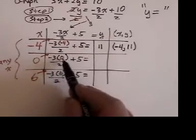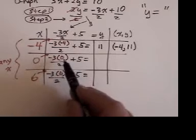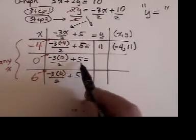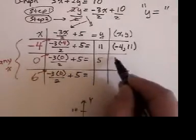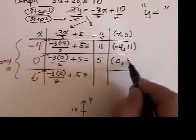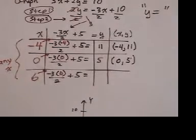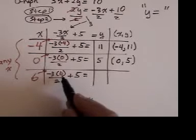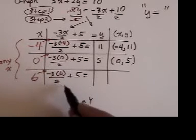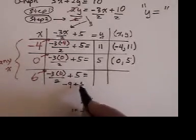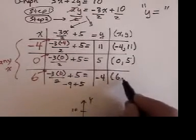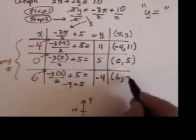Now I do negative 3 times 0. Well, anything times 0 is 0. 0 divided by 2, 0 divided by anything is 0. And 0 plus 5 is 5. So you can see that 0 and 5 are very useful to work with. Negative 3 times 6 is negative 18. Negative 18 divided by 2, that's negative 9. And negative 9 plus 5 is negative 4. So 6 is going to go to the dance with a negative 4.